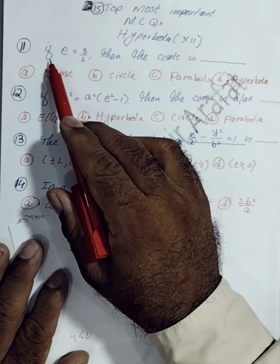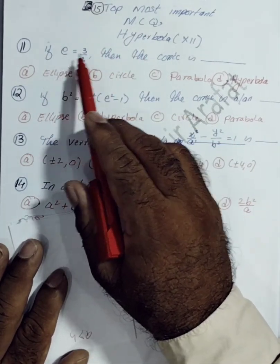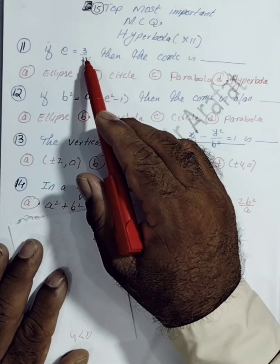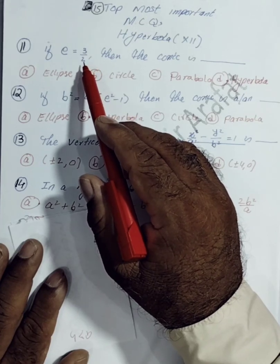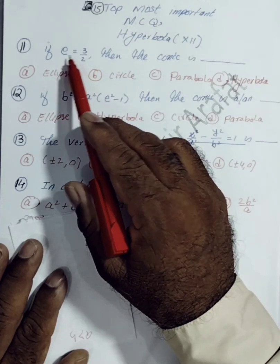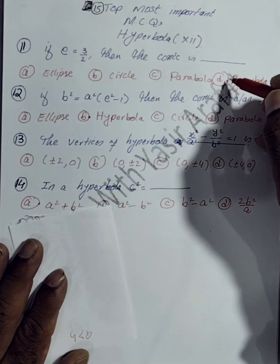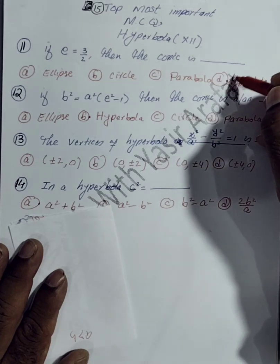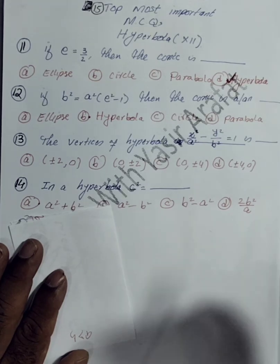The eleventh MCQ: for eccentricity E = 3/2, since 3/2 > 1, E > 1, which means the conic is a hyperbola.